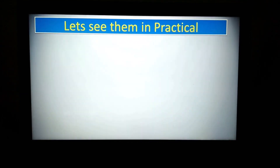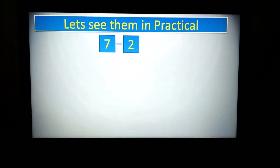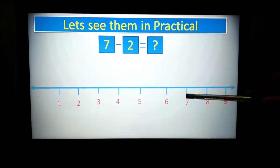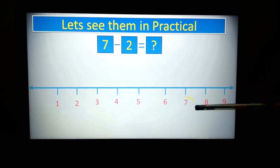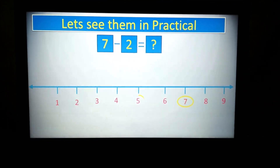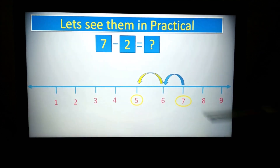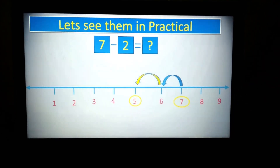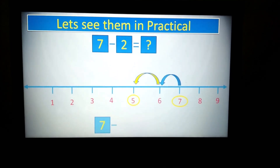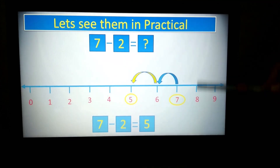Now let us see another example: 7 minus 2. Again we will use a number line. Stand on number 7, then move 2 times to the left — 1, 2. So the answer is 5. By hopping 2 times you will get the answer.